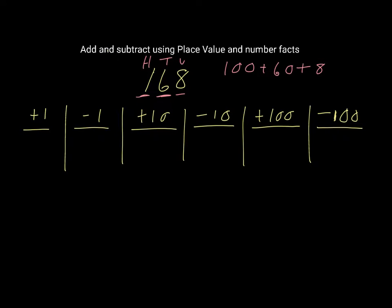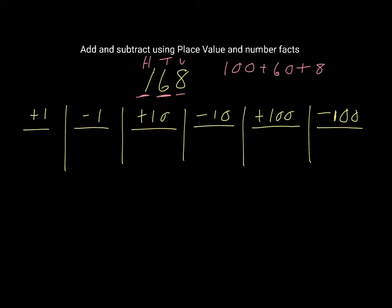So if we have 168 and we are adding 1, that means the only digit out of these 3 that's going to change is the units digit. That digit is 8 right now, but if we add 1 to it, 8 plus 1 is going to be 9, so our new number is going to be 169.